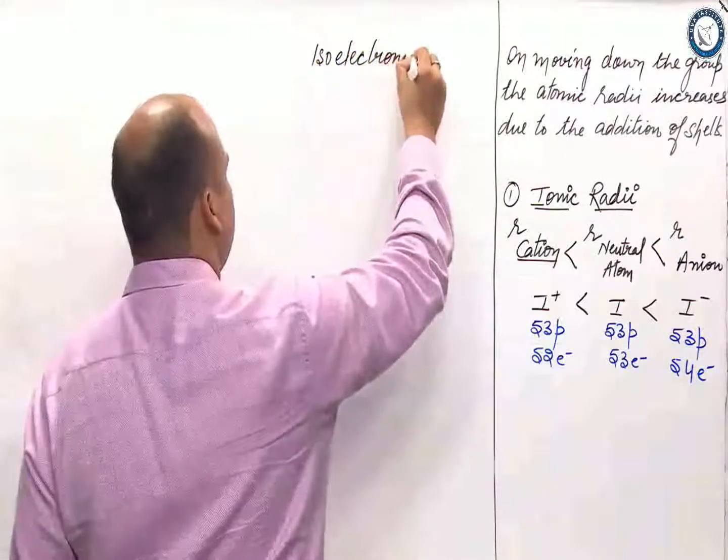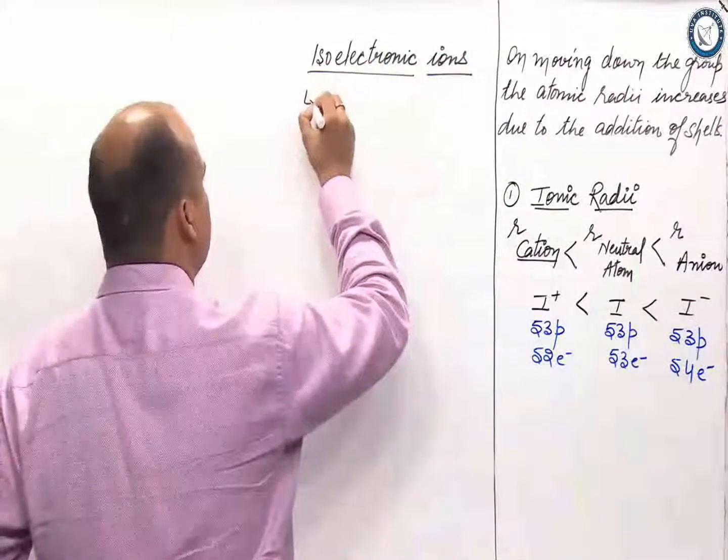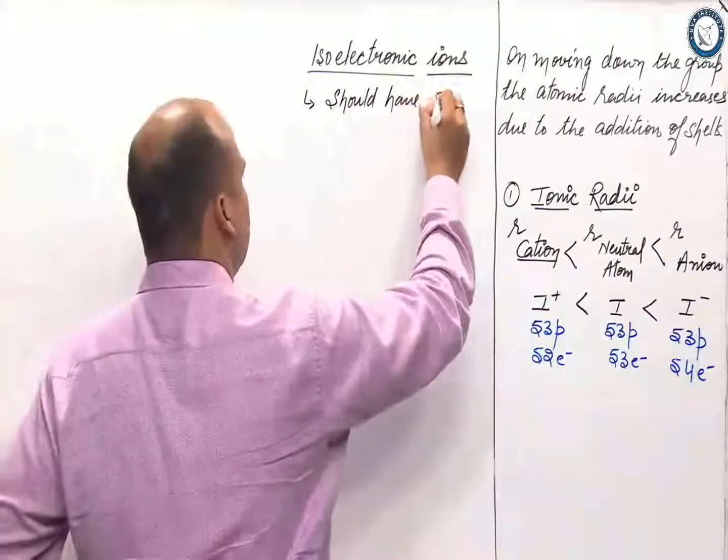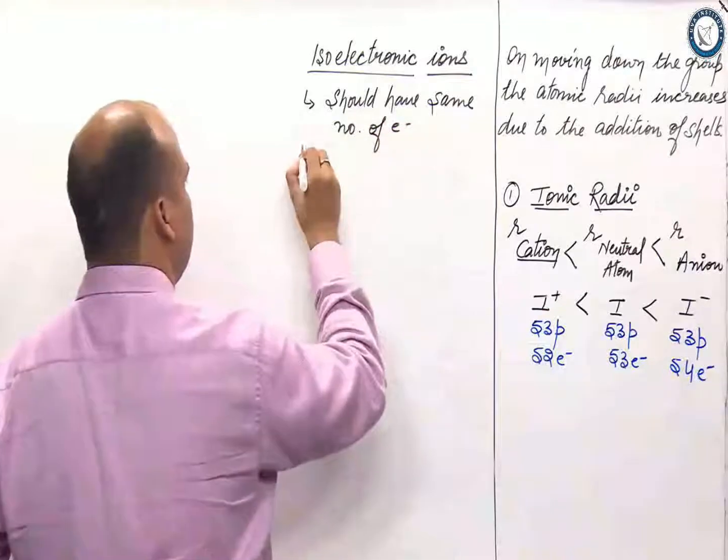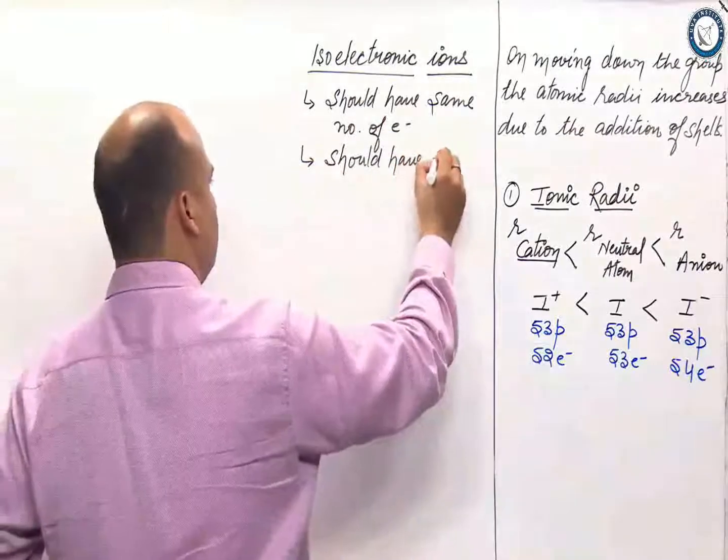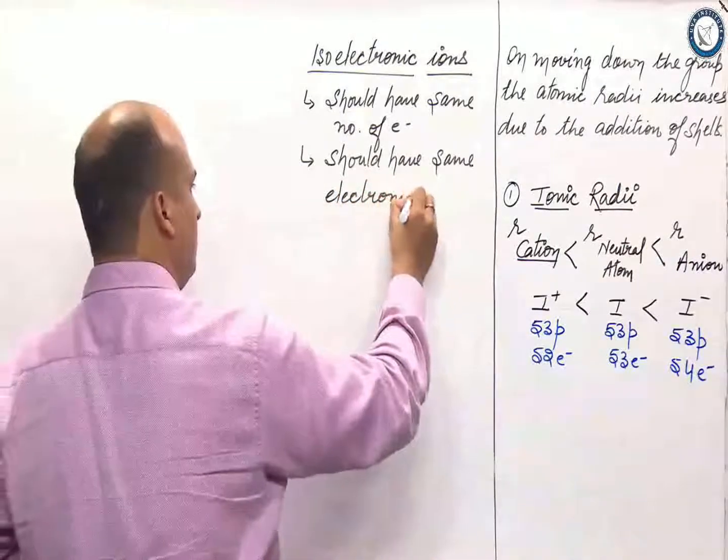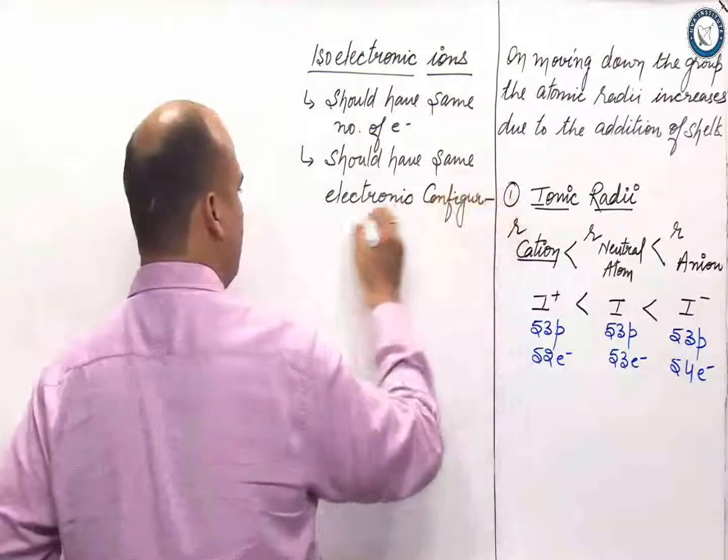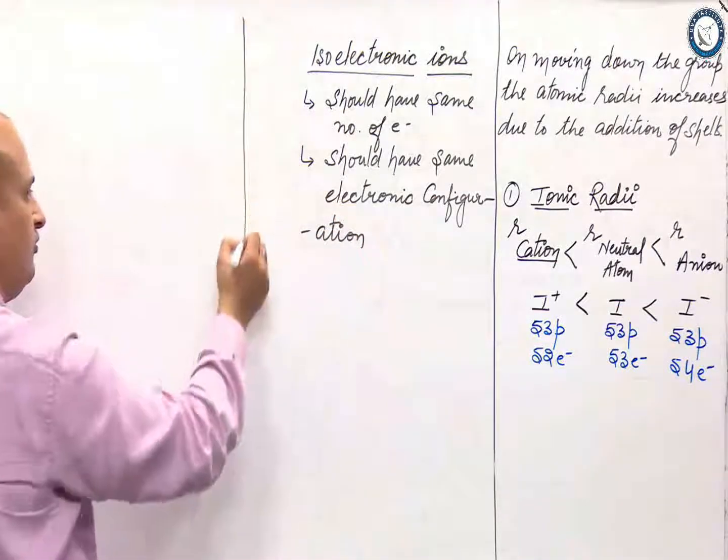Can you tell me what are isoelectronic ions? First, they should have same number of electrons. Second, they should have same electronic configuration.